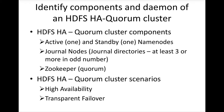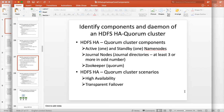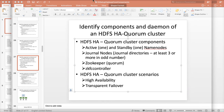On top of these things there will be a controller process — ZKFC, the ZooKeeper Failover Controller process — which will be running. So these are the components: active and standby name nodes, journal nodes, and the ZKFC controller.